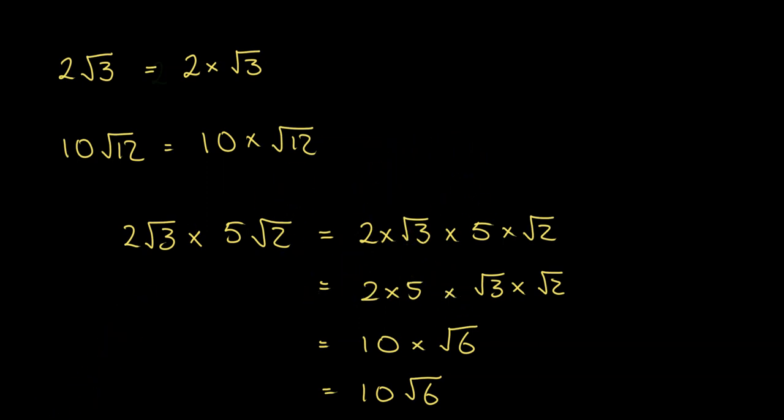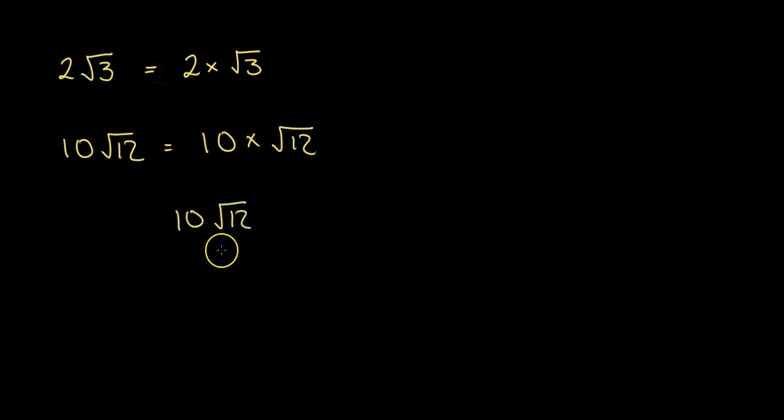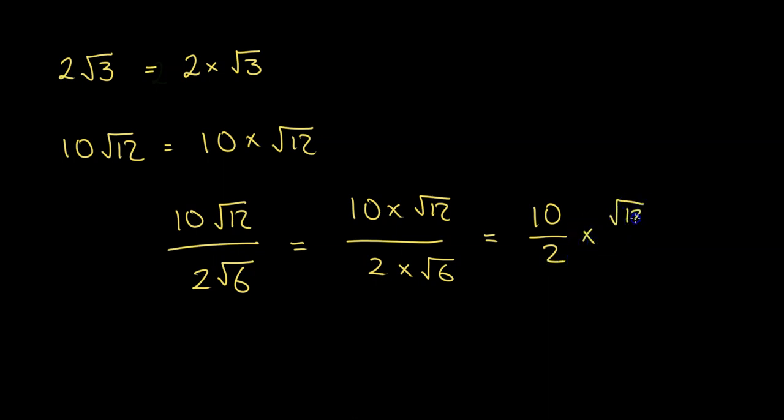Now this also works with division as well. So here I've got 10 root 12 divided by 2 root 6. So the process works exactly the same. I've got 10 times root 12 divided by 2 times root 6. Now I could separate this into two fractions. My 10 over 2 multiplied by my root 12 over root 6. And then I can work out this 10 over 2 is going to be 5. And using my division rule for surds, I know that this second surd is going to be root 2. So combining those, I get 5 root 2. So again, this process you can do in your head. Just do this first number divided by this first number gets me the 5. And then combine the roots into a single root as root 2.